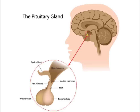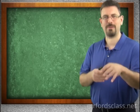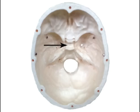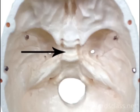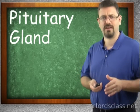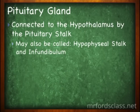It sits in the Turkish saddle. If you remember from your skeletal system, within the skull we had the sphenoid bone, and within the sphenoid bone we had a dip. This dip was the sella turcica, which translates into Turkish saddle. So the pituitary gland is sitting in the sella turcica. It is connected to the hypothalamus by something called the pituitary stalk, also known as the hypophyseal stalk or infundibulum.